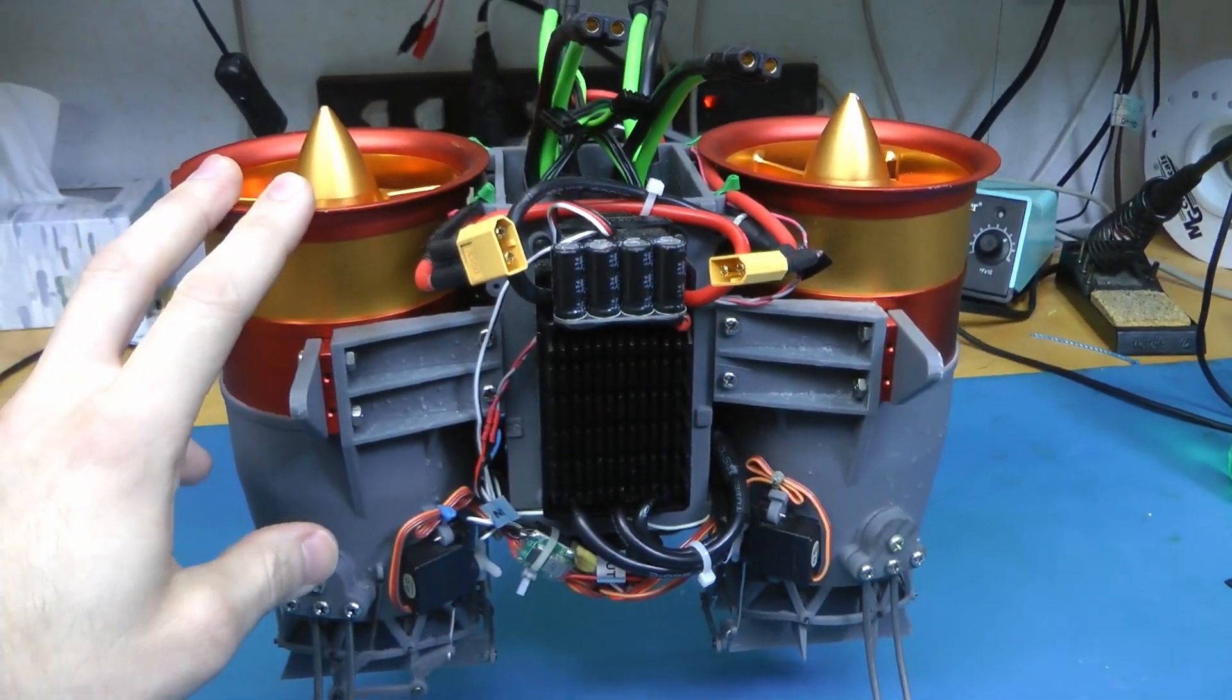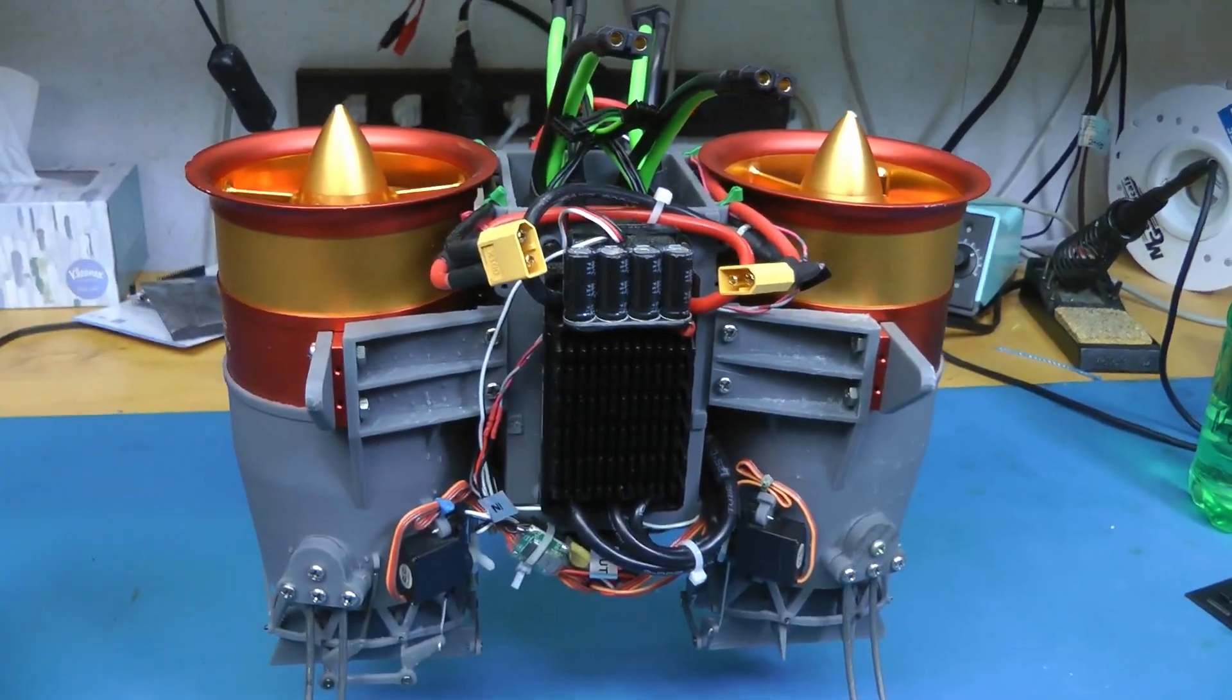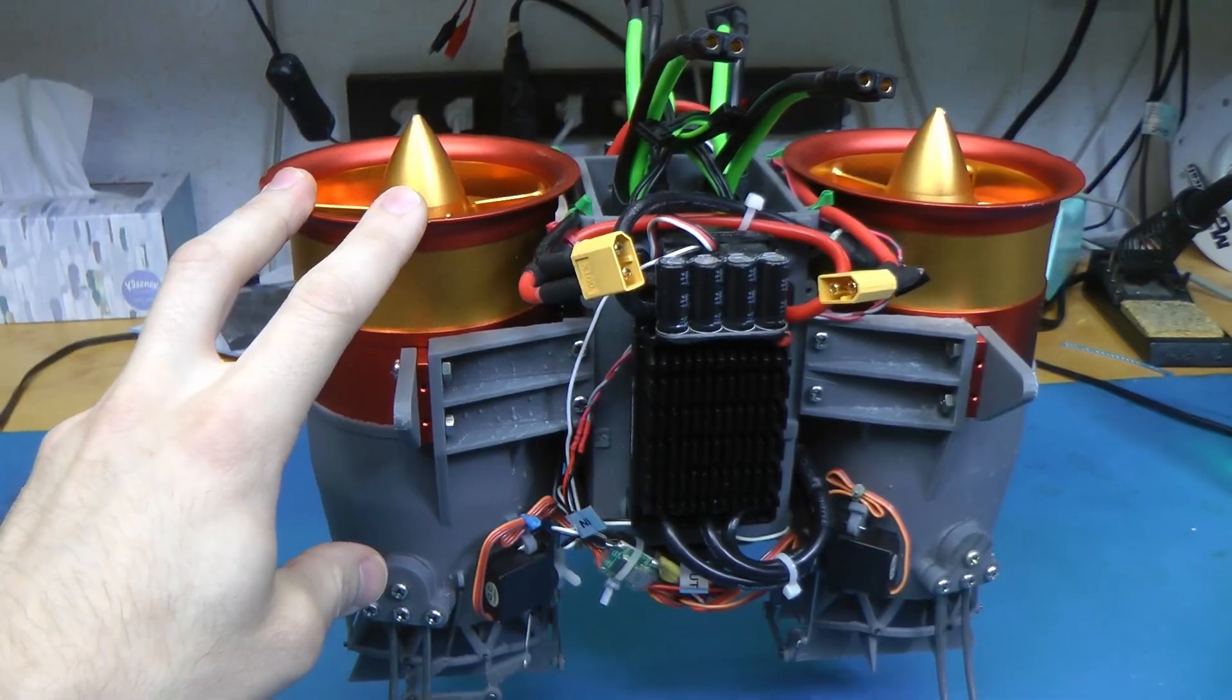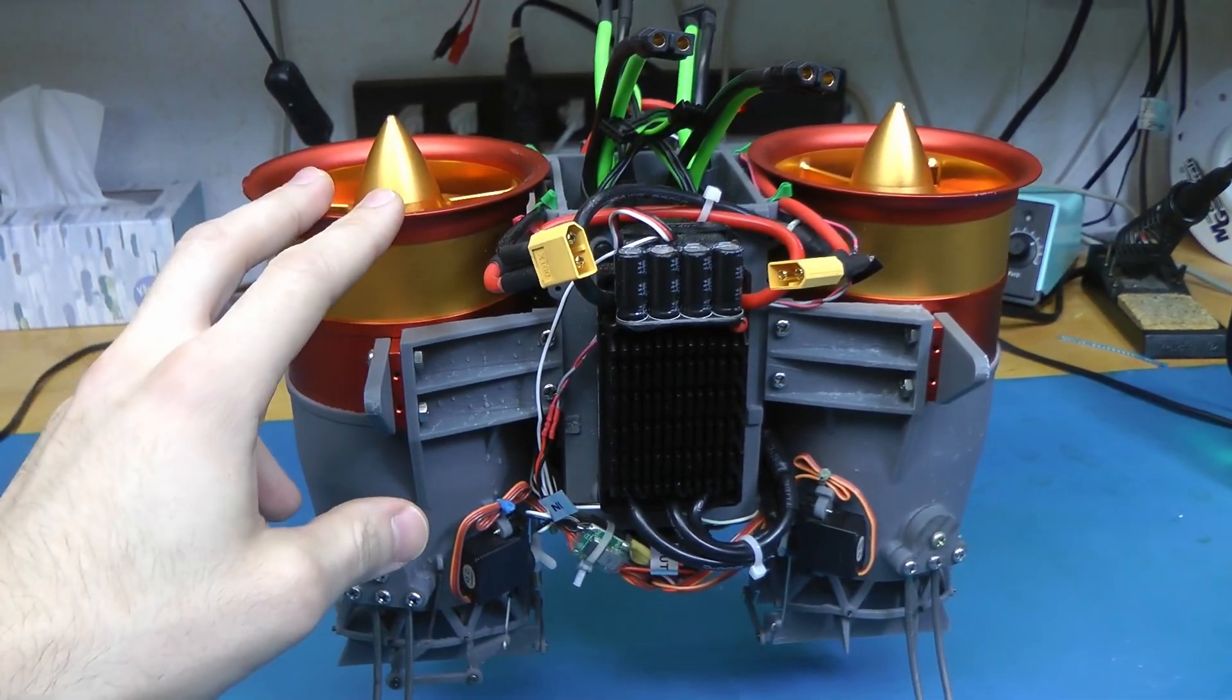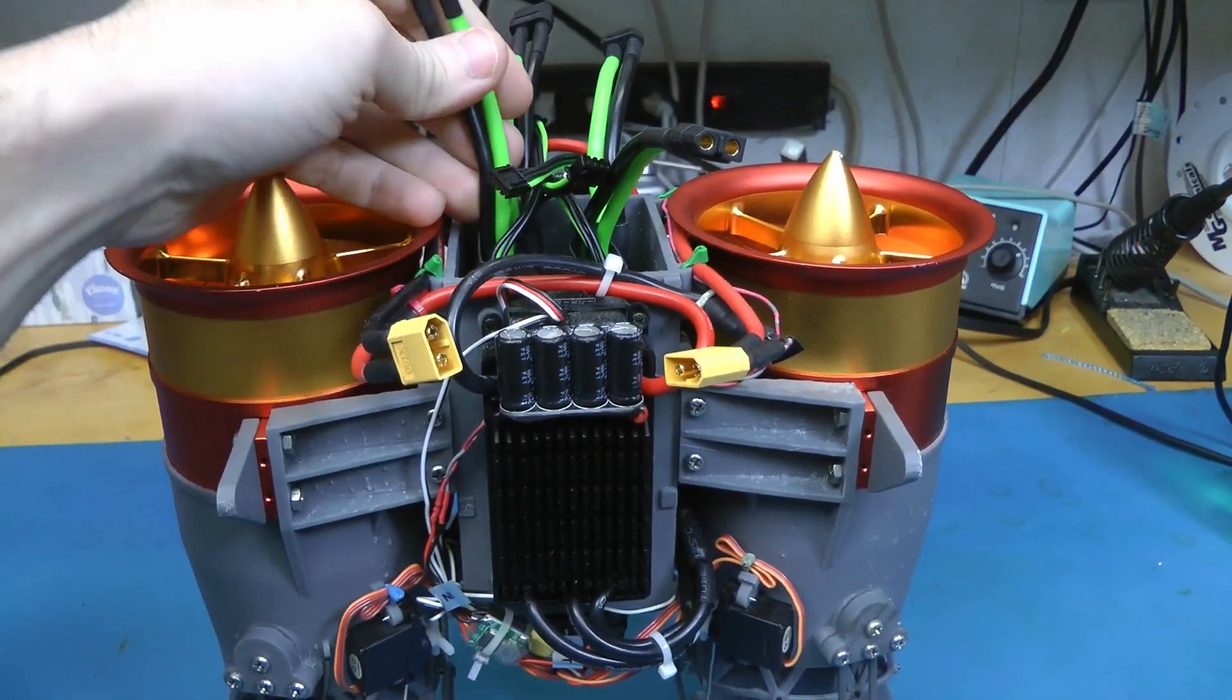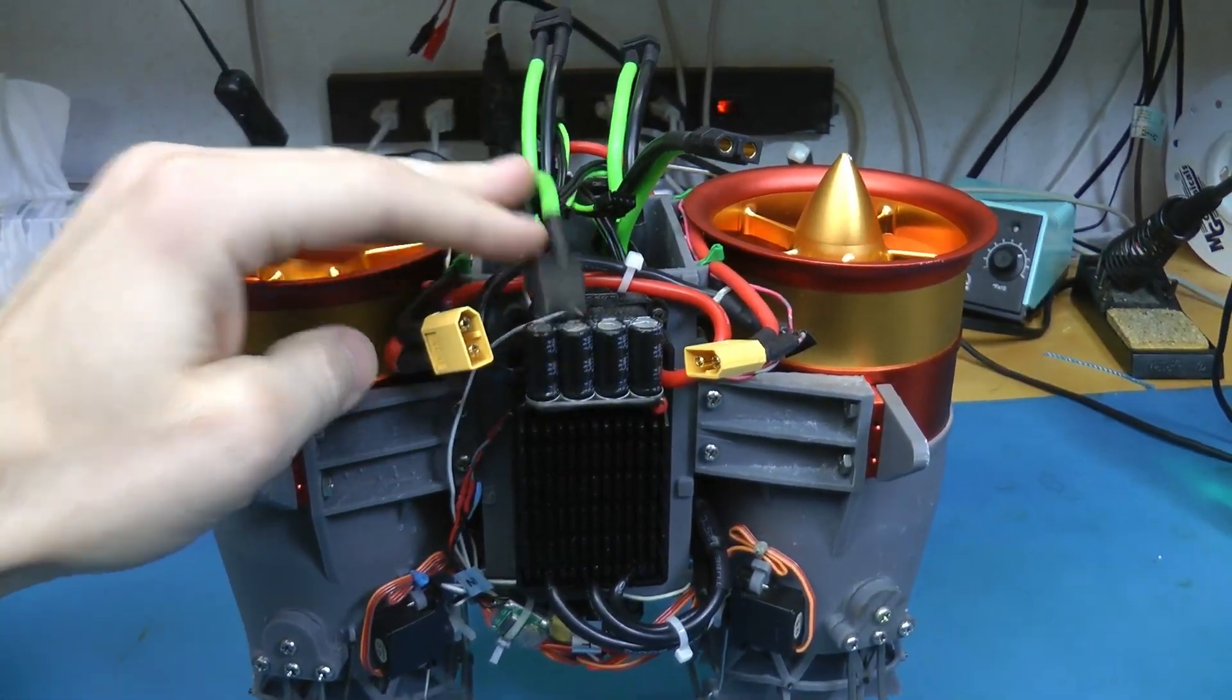This weighs, in its current configuration, it's very heavy, about 3kg. And the EDFs should be able to do about 5kg thrust each, so about 10 total, so it has about 3 to 1 thrust-weight ratio. I think it has a little bit less just because the battery voltage will sag a bit.